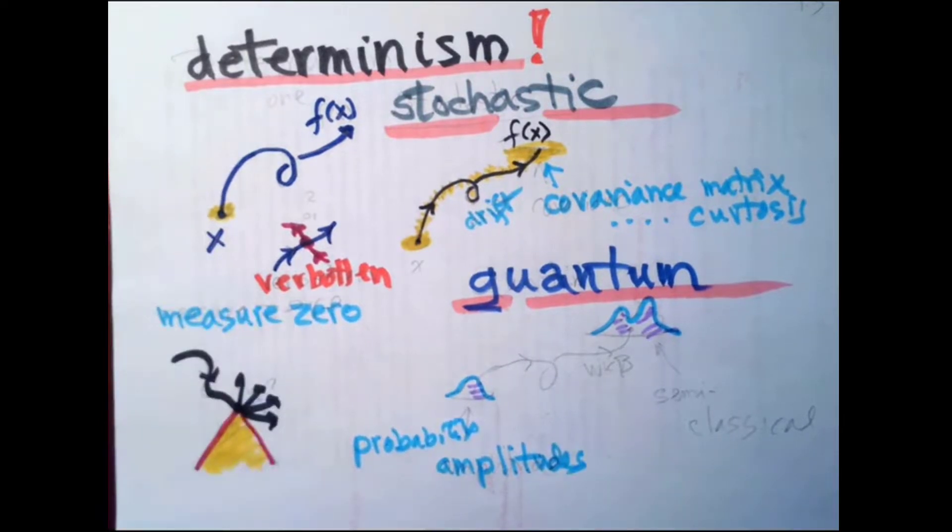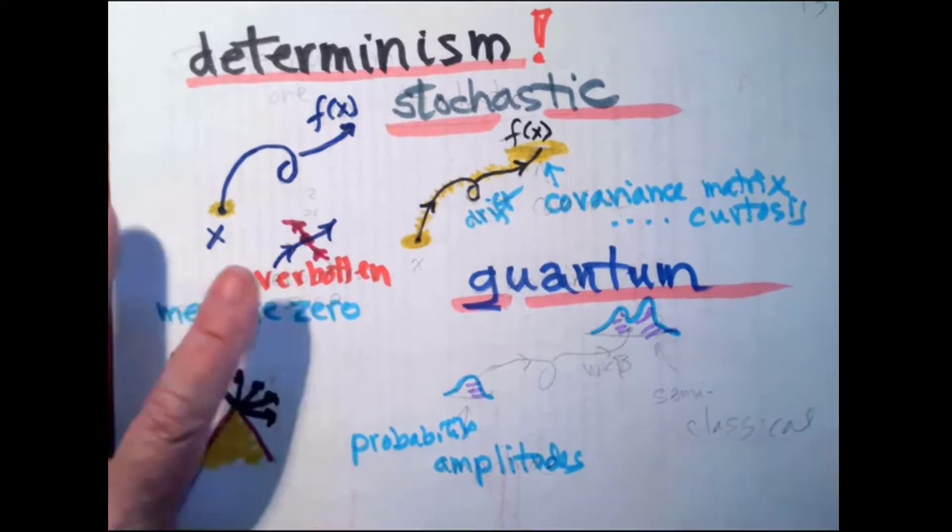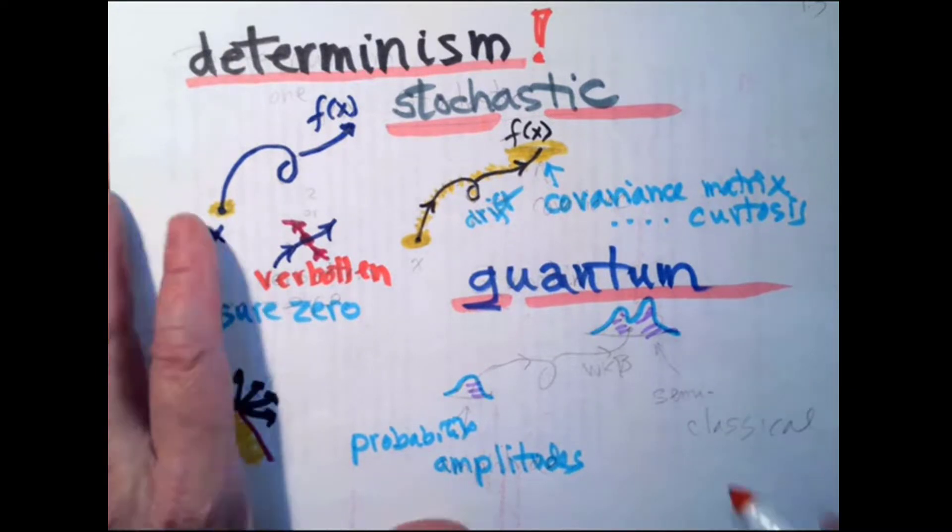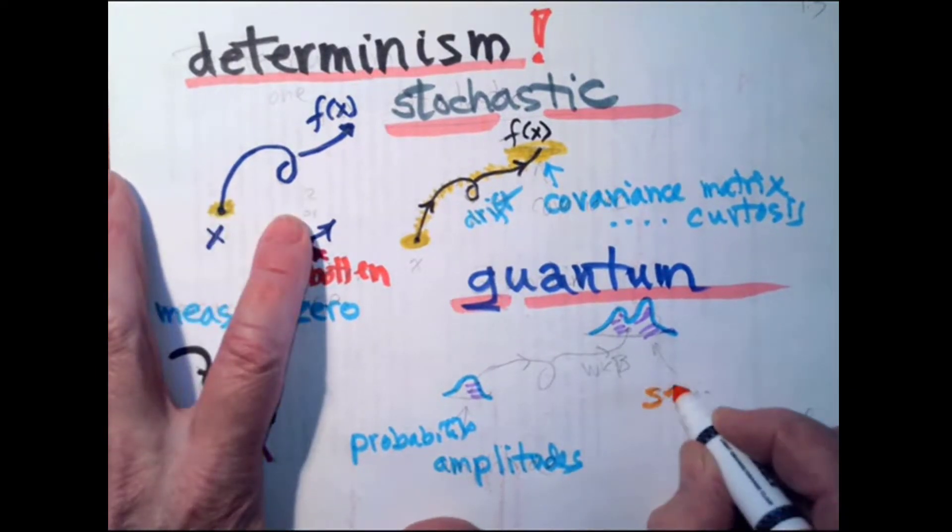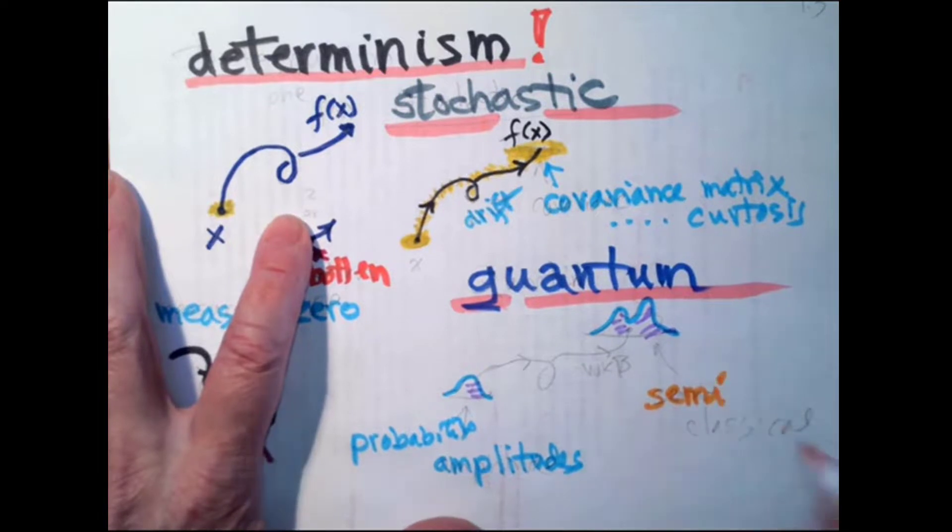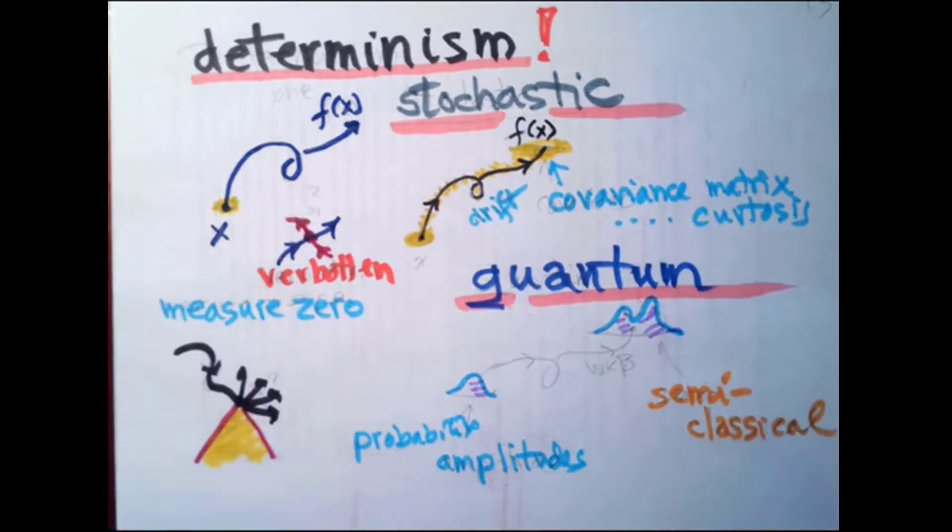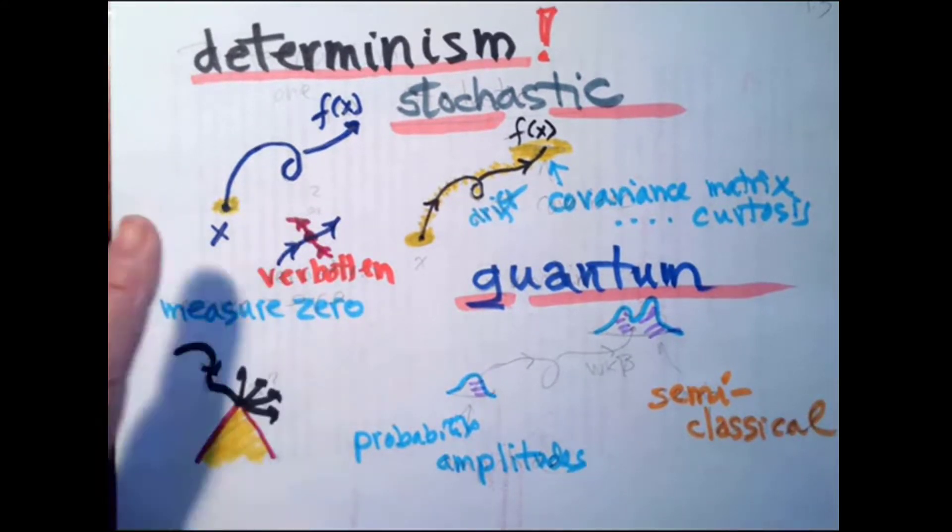And the way they teach you quantum mechanics, it looks totally different from Newton. So you think two things have nothing to do. But there is a thing that people understood at the very beginning. I mean, quantum mechanics is no good unless it agrees with classical mechanics in appropriate limit that's called semi-classical limits.